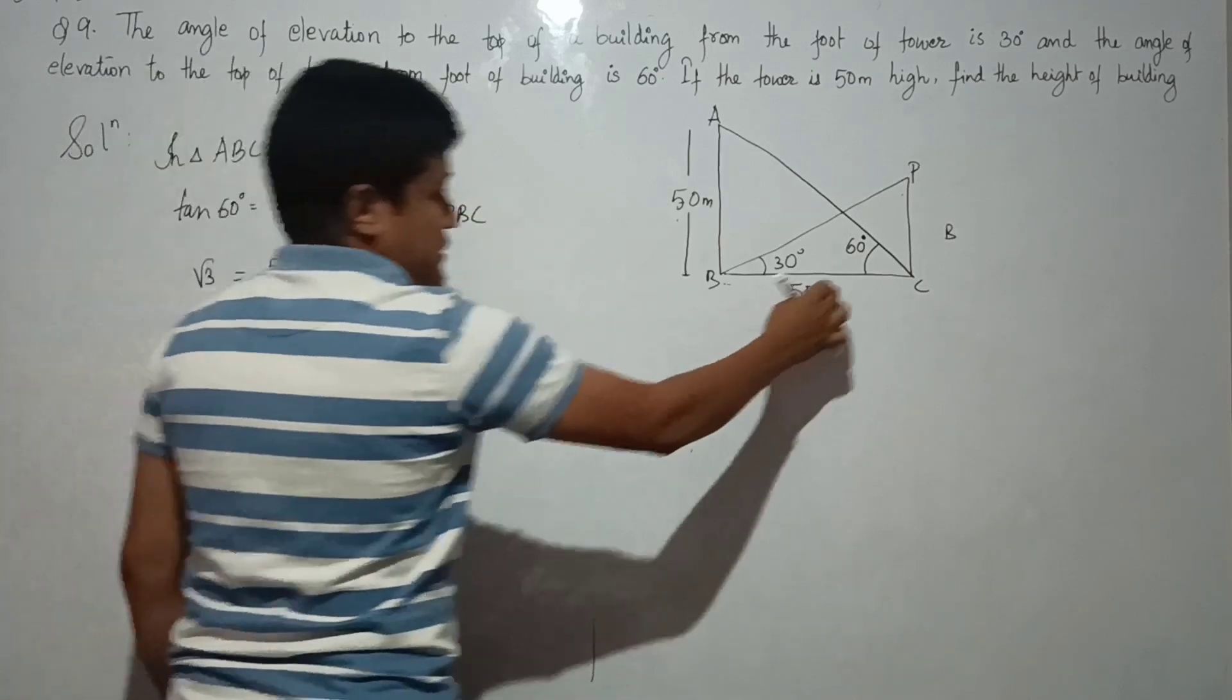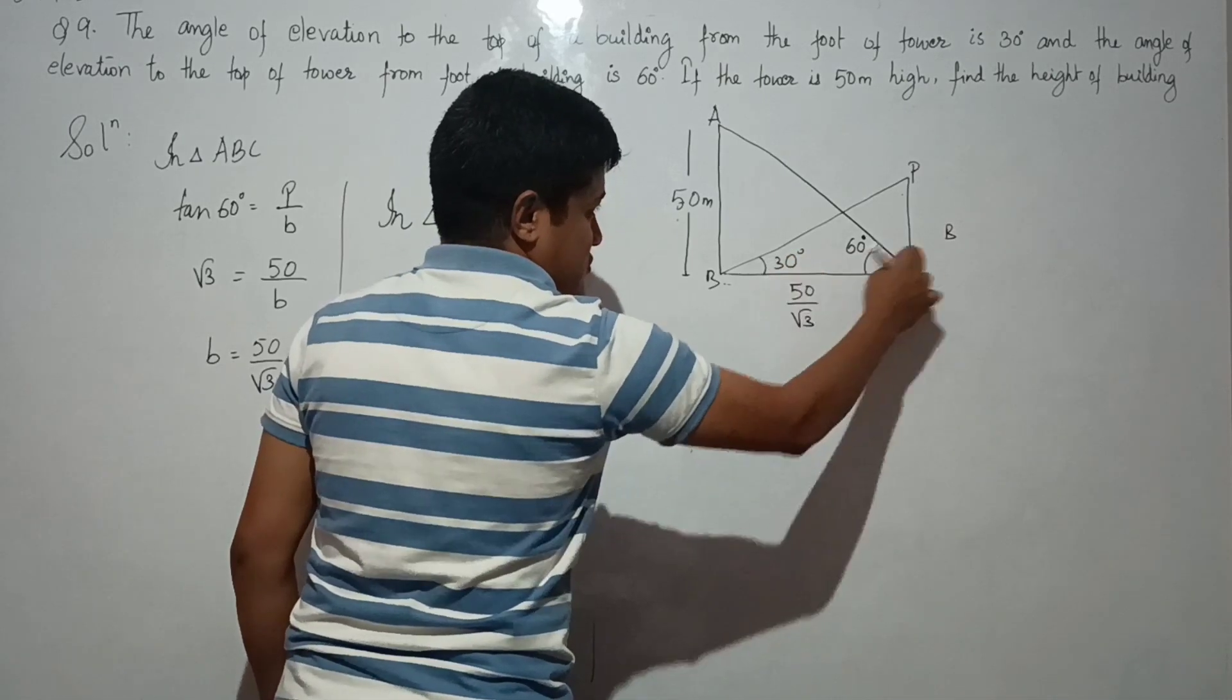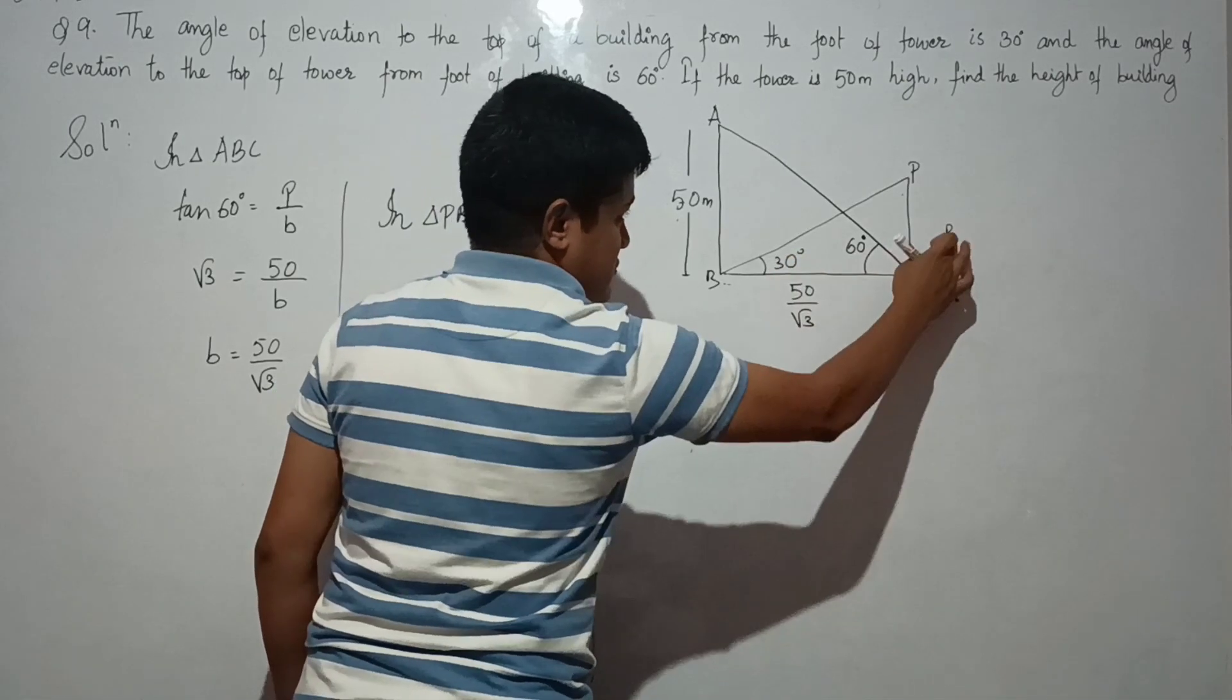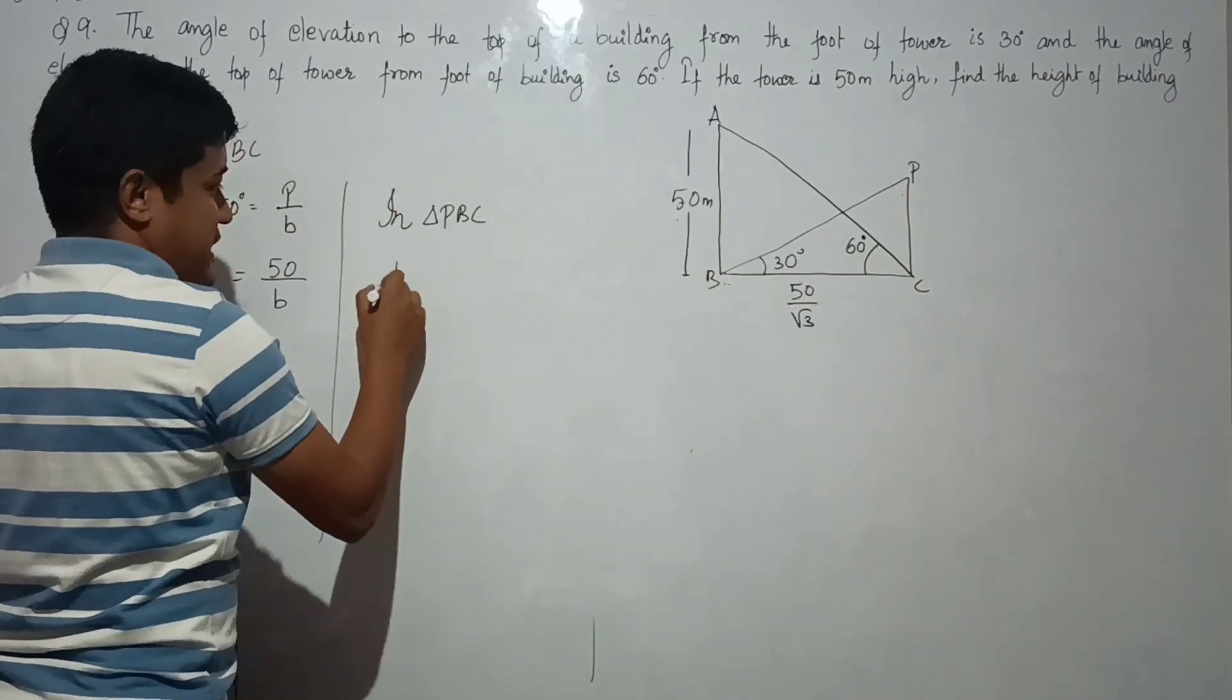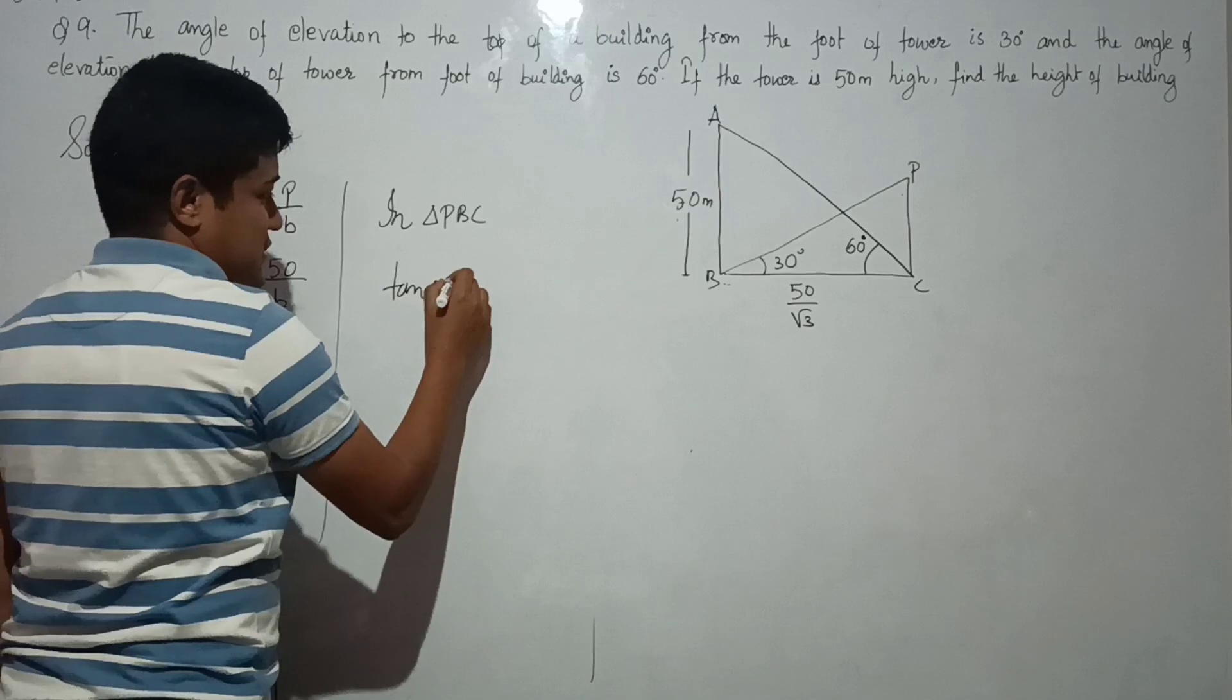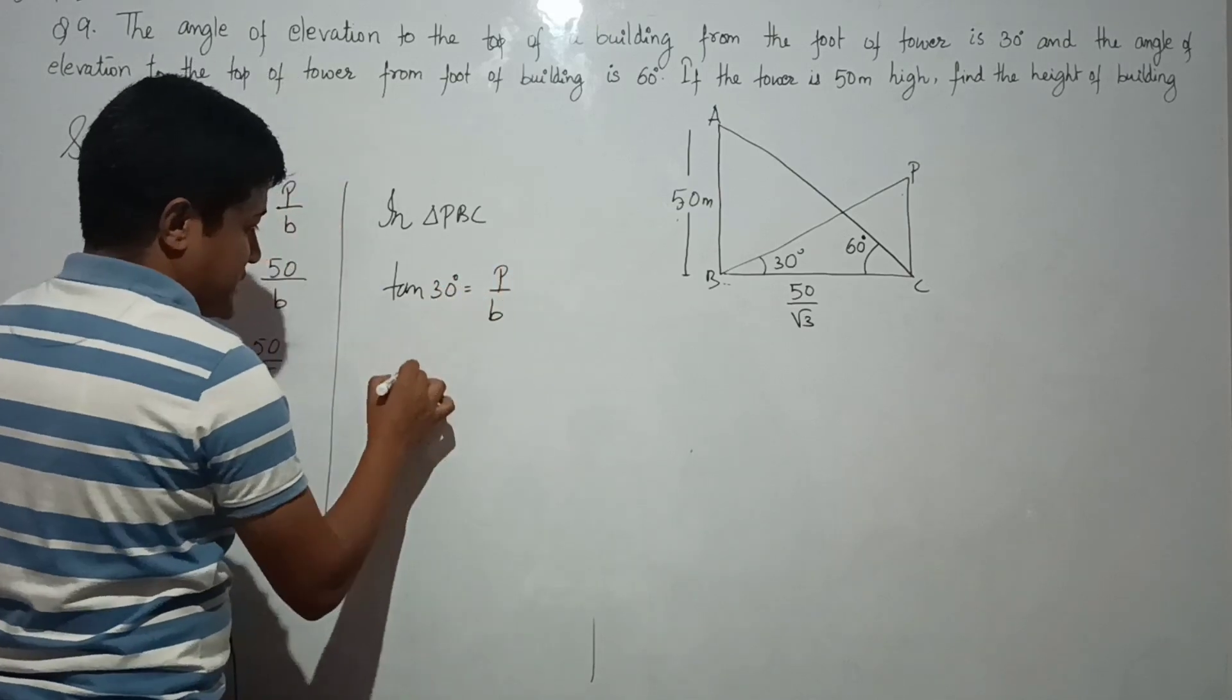again in this triangle, tan 30 degrees equals to perpendicular by base. So this is the building. Tan 30 degrees equals perpendicular by base. So tan 30 is